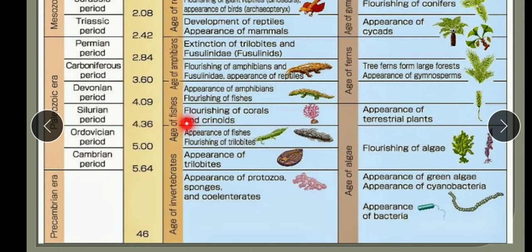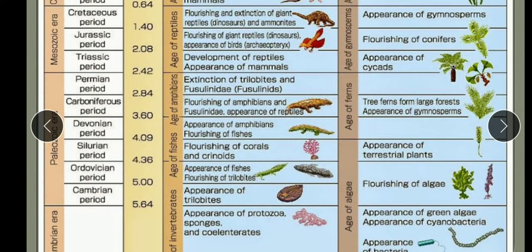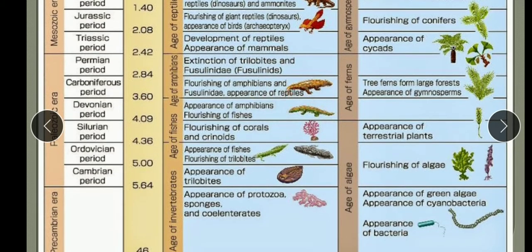In the Silurian period, corals and crinoids flourished, some fishes appeared, indications of insects emerged, and primitive bryophytes appeared as the first terrestrial plants. In the Devonian period, fishes dominated and the origin of amphibians occurred. The plants present in the Devonian period were ferns and pteridophytes, representing the further development of terrestrial plants which then evolved towards gymnosperms.